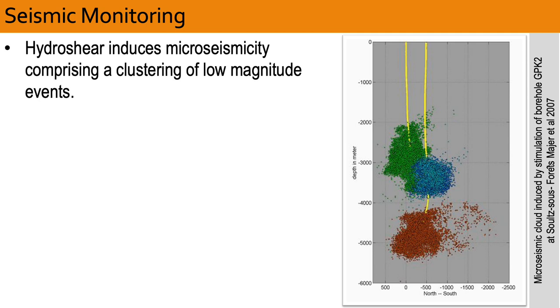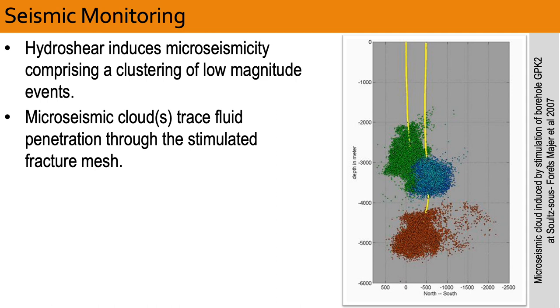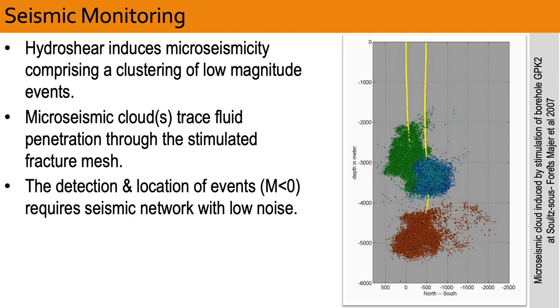One of the main consequences of hydro-shearing is induced micro-seismicity, which is the clustering of many individual earthquake events that are tiny, low magnitude, and unfelt at the surface. The clustering of micro-seismic events creates clouds that trace fluid penetration through the stimulated fracture mesh. The detection and location of slip events, having magnitudes as low as less than zero, are made possible with a seismic network comprising distributed instruments that have been located in settings with low ambient noise. This often requires borehole deployments, and the sensors may include three-component geophones, broadband seismographs, and fiber-optic cable known as DAS, which stands for Distributed Acoustic Sensor.